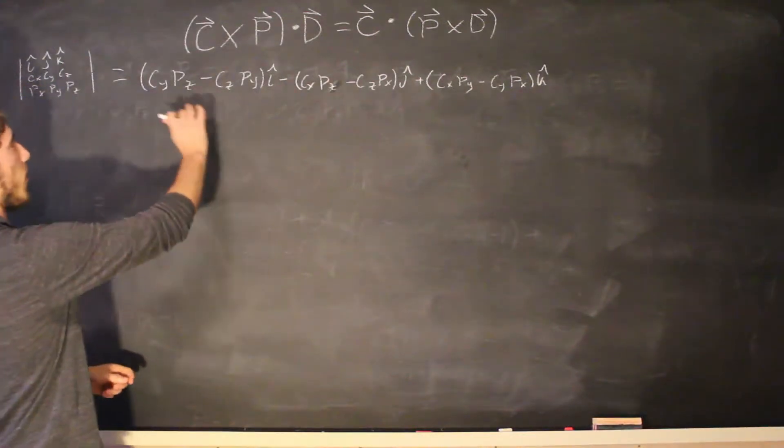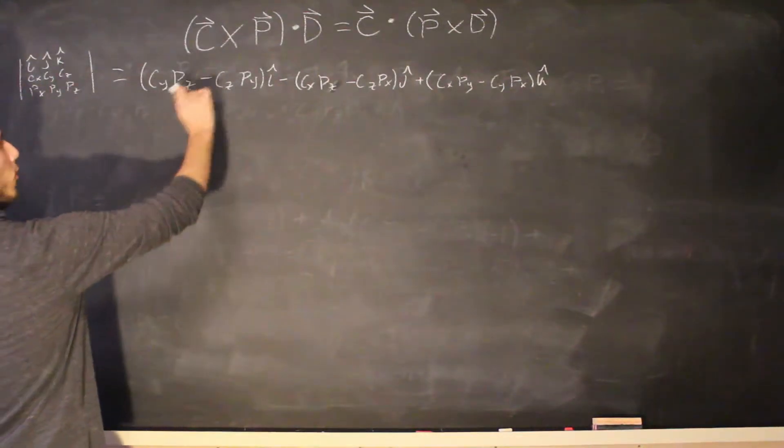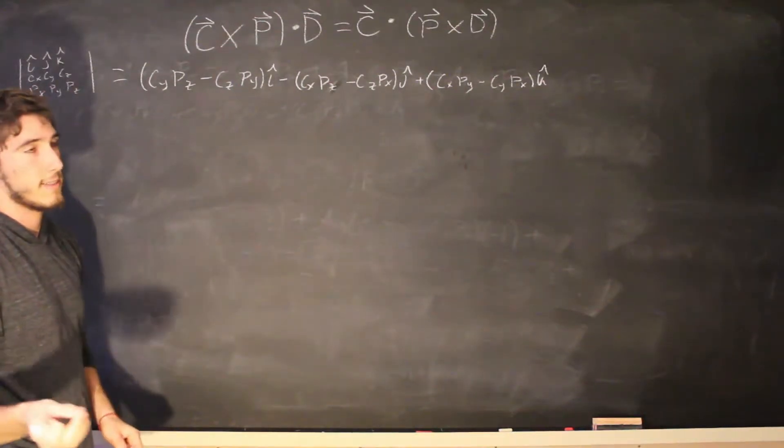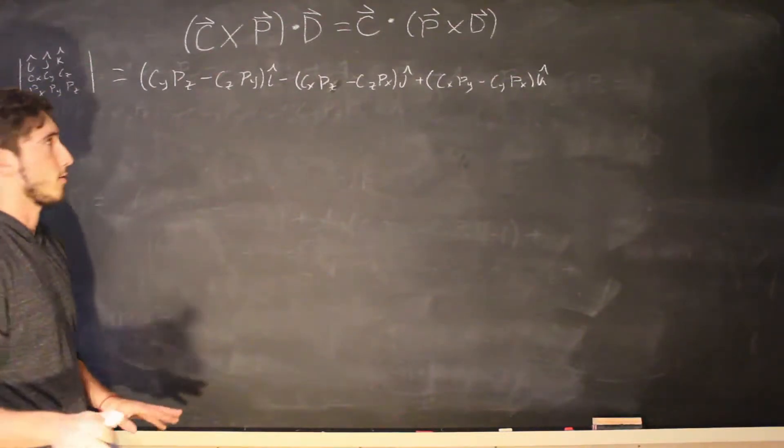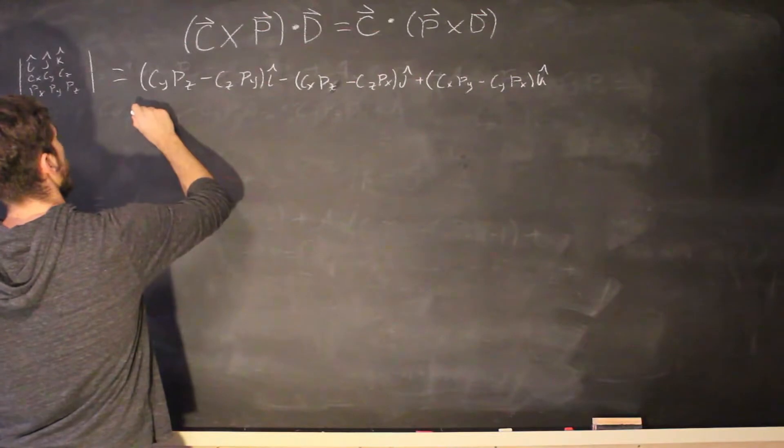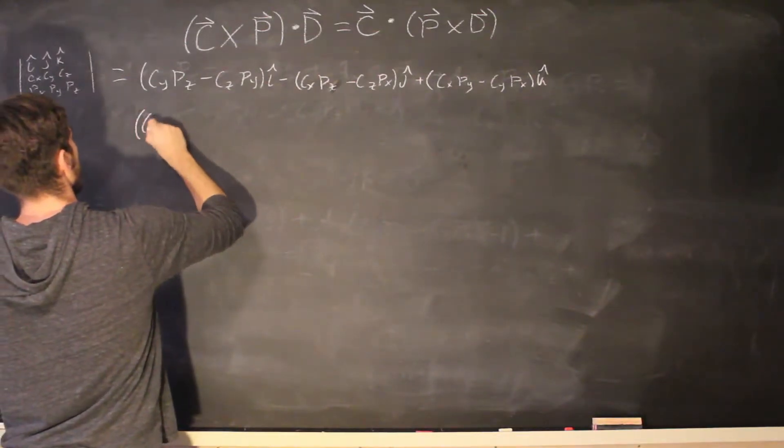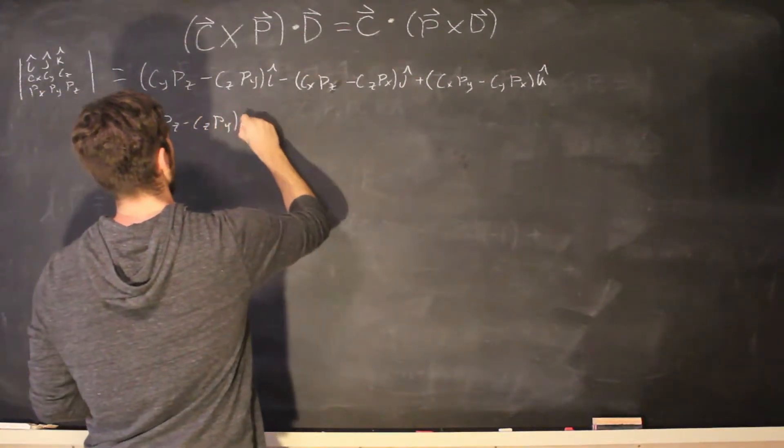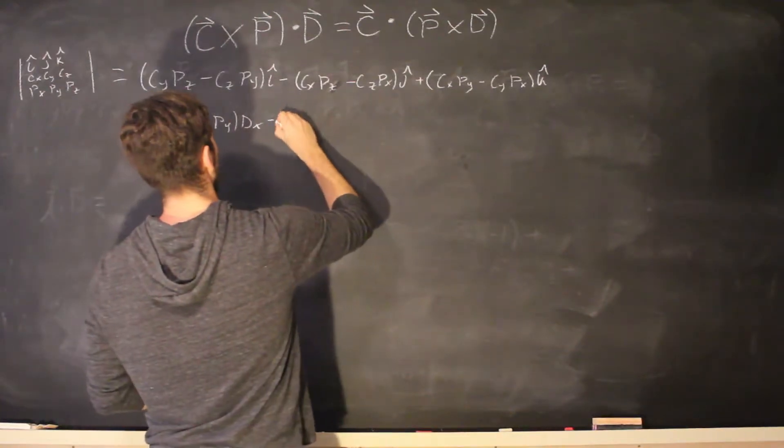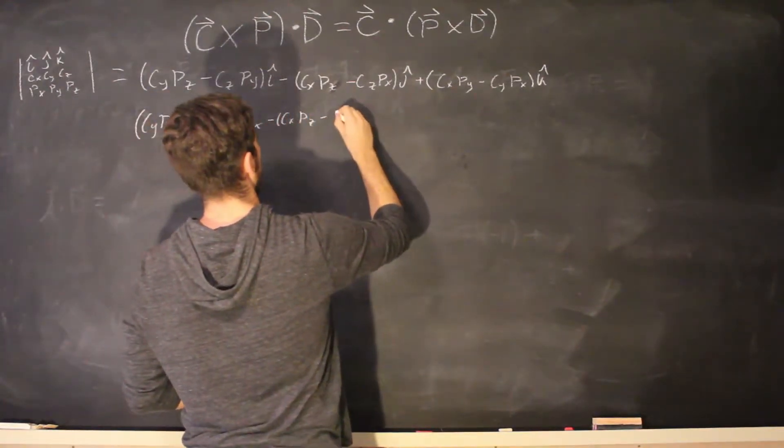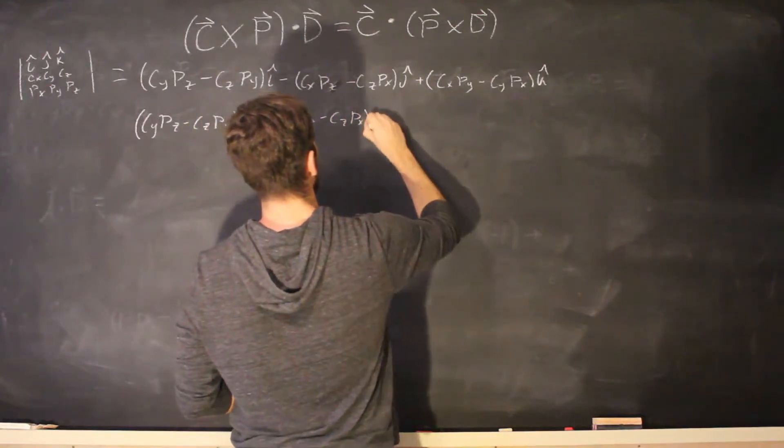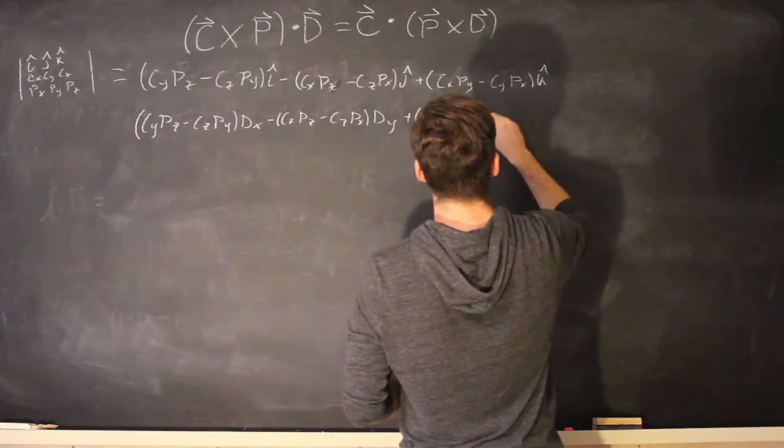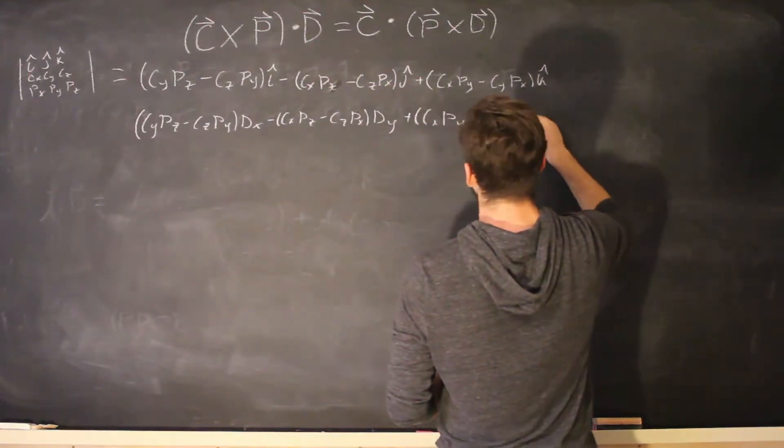So the x term for the cross product is the I term so we're going to multiply it by D of x and I hat is going to go away because the dot product is a scalar product and it doesn't have any vector components.